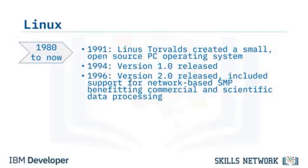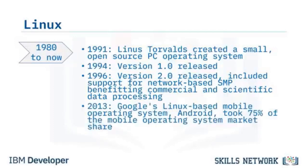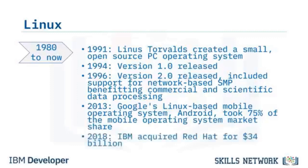Throughout the next 10 years, Linux gained market acceptance and its distributions continued to mature. In 2013, Google's Linux-based mobile operating system Android took 75% of the market share. When evaluating the value of Linux, consider that in 2018, IBM acquired Red Hat for US$34 billion.